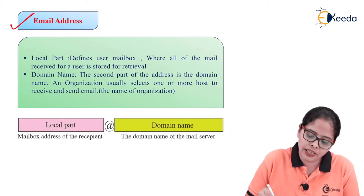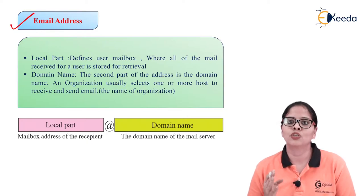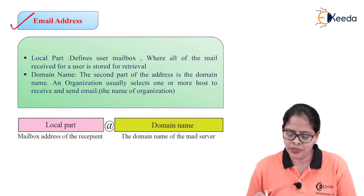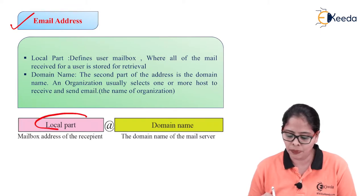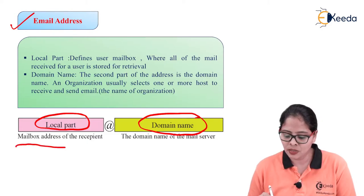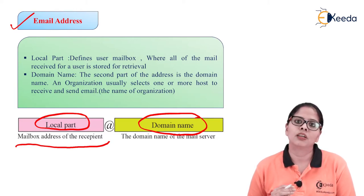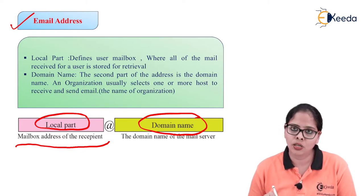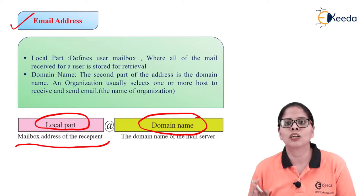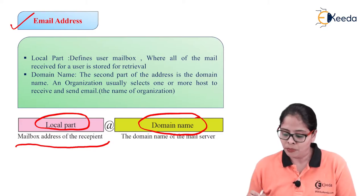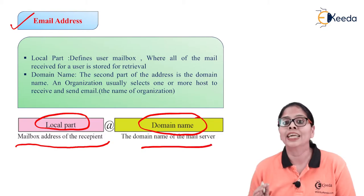Now let us discuss the email address. Whenever you send a mail, you should know the email address of the receiver. Basically, it consists of two parts: the first is the local part and the second is the domain name. The local part is the mailbox address of the recipient. For example, the email ID is adhved.bh@gmail.com — so adhved.bh is the local part. At the rate gmail.com — Gmail means the mail server is Google. If it is Yahoo, it will be yahoo.com. The domain name tells the name of the mail server.